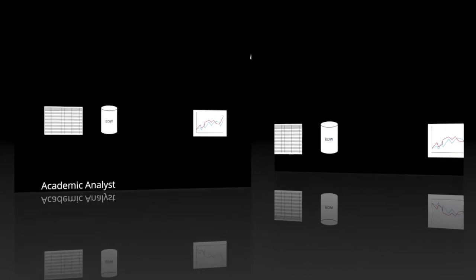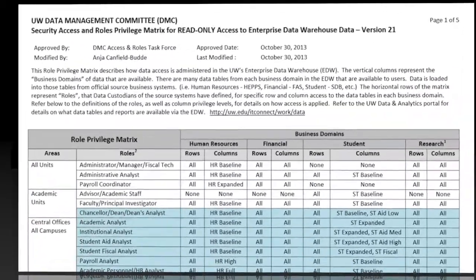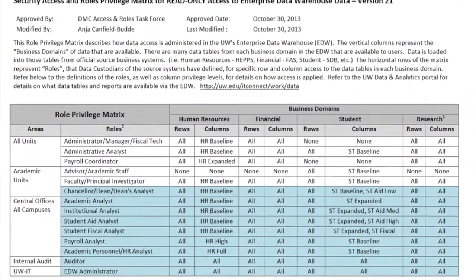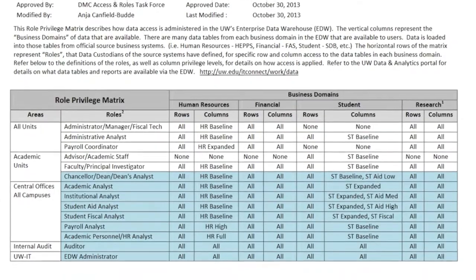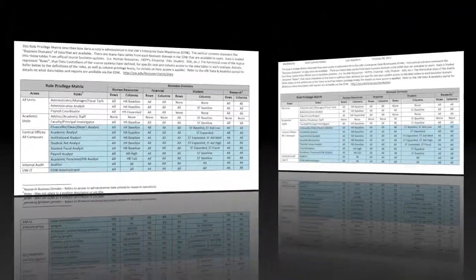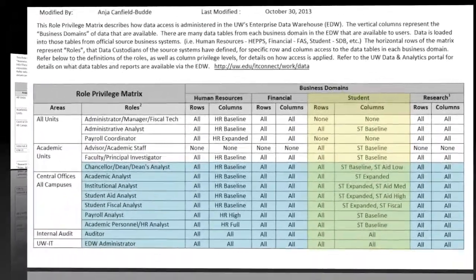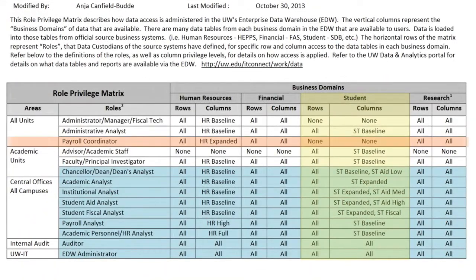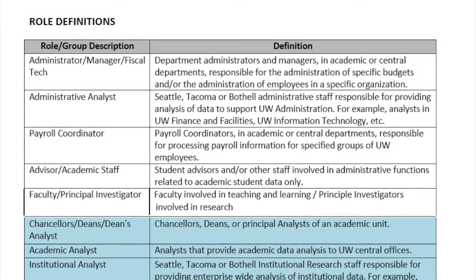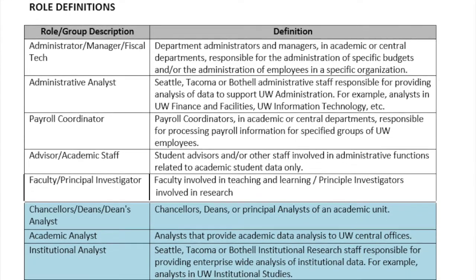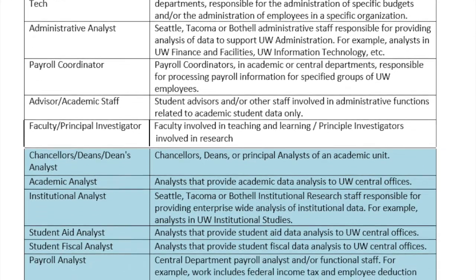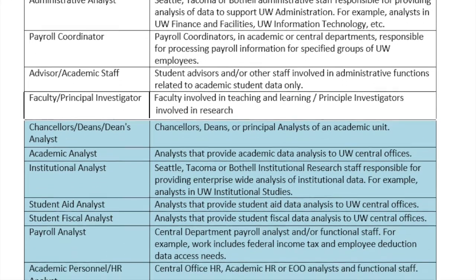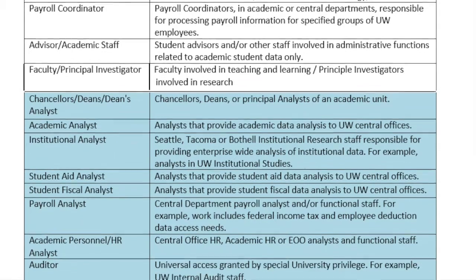The Security Access and Roles Matrix exists to help explain in general terms what each role should have access to view. For example, consider a table of student data — a payroll coordinator should not have access, but an administrative analyst should. The Security Matrix also has more detail on who should be in what role and what the privilege levels are.